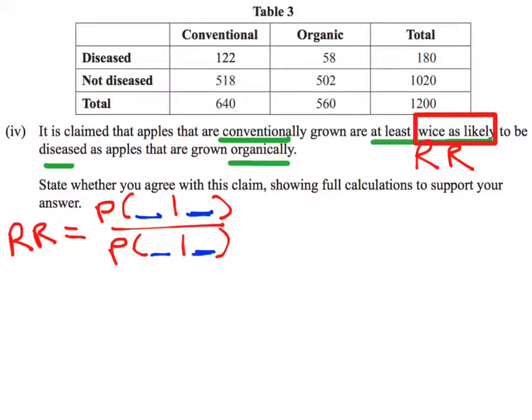Let's talk about apples that are conventionally grown. That tells me that's my condition on the top - I'm just talking about the apples that are grown conventionally. From those grown conventionally, I want to know what their chance of having a disease is. So I want to know the probability of a diseased apple given that it's conventionally grown.